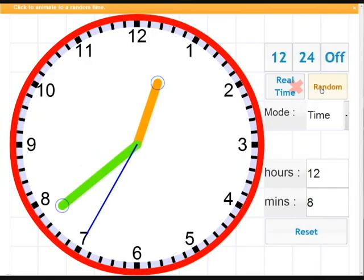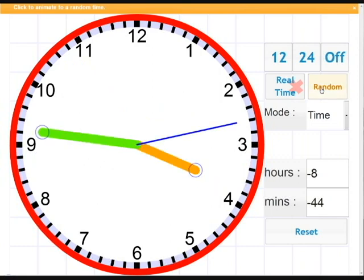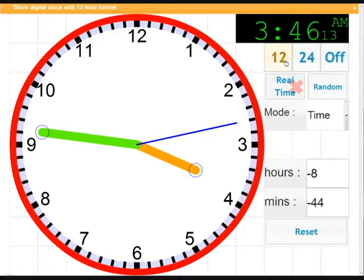If we click the random button next to it we get a random time. So obviously this is a great feature to test if students can actually tell various times because there's endless possibilities. It also works well with the display at the digital time so they can check if they're correct.